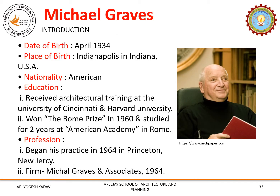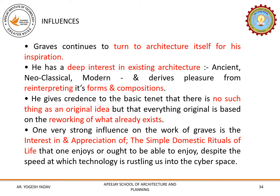Now we will discuss Michael Graves, another architect of the New York 5 group. Architect Michael Graves was born in 1934 in Indianapolis, USA. He was an American architect who received architectural training at the University of Cincinnati and Harvard University. He won the Rome Prize in 1960 and studied for two years at the American Academy. He began his own practice in 1964 with the firm Michael Graves & Associates. Michael Graves was a postmodern leader who continued to turn to architecture itself for inspiration. He was very much interested in reinterpreting the forms and compositions of existing architecture like ancient and neoclassical styles.